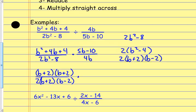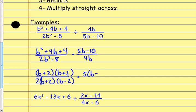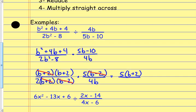Over here, 5b−10 — I factor out a 5, which leaves me with (b−2), and then this just stays as 4b. Now I cross out common factors: there's a set of (b+2)s that cancel, and the (b−2)s cancel. In my numerator I'm left with a 5 and a (b+2); in the denominator I've got 2 times 4b which is 8b. So the answer is 5(b+2) over 8b.